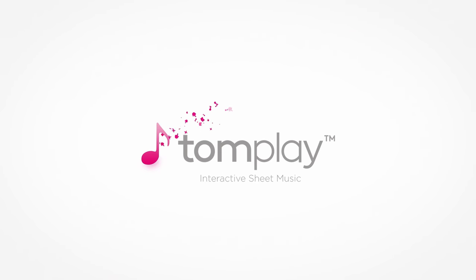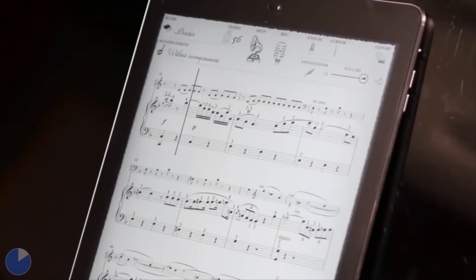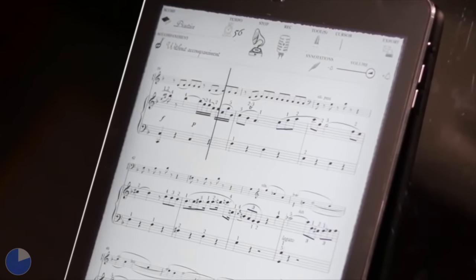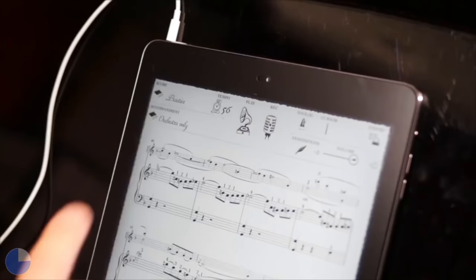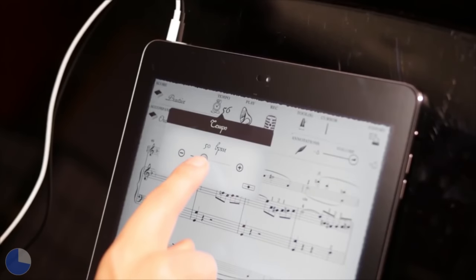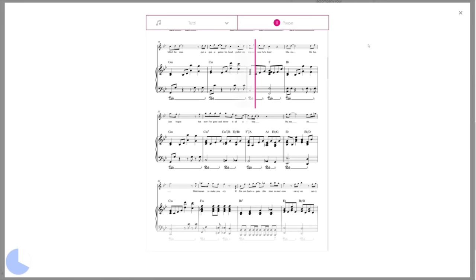Tomplay is an app that gives you access to over 40,000 pieces of sheet music. However, Tomplay is far more than just a sheet music library. The Tomplay app can also create a custom backing track for you to play along with, which means, for example, if you wanted to learn the piano part for Bohemian Rhapsody, you could actually have Tomplay sing along as you play to give you a better sense of where you are in the piece.